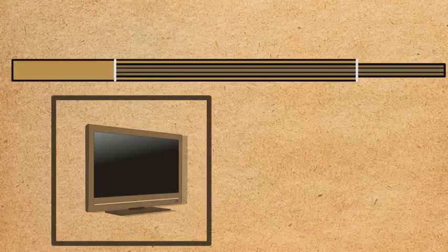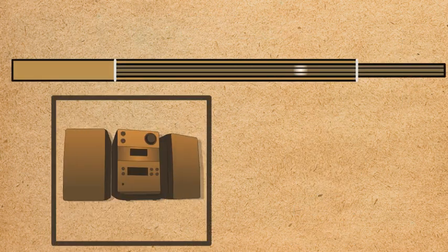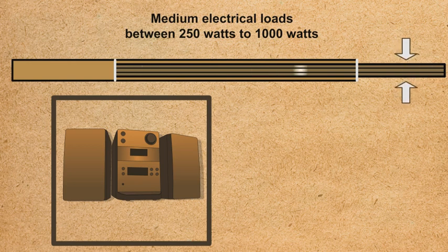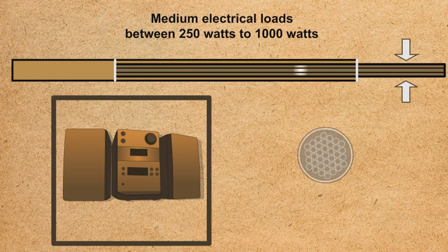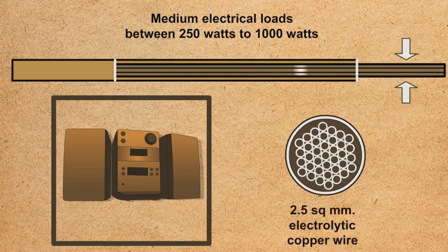Appliances like TV, refrigerator and music system carry loads between 250 and 1000 watts. These require 2.5 square millimeter electrolytic copper wire.